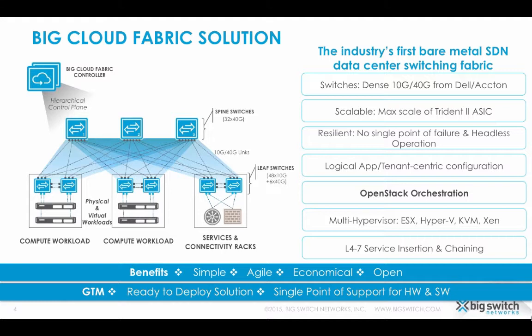Some intelligence is judiciously offloaded to Switch Light OS on each switch for resiliency and scale. Redundancy is built throughout the fabric, across switches and controllers, to ensure no single point of failure. Headless mode, where the entire controller cluster is unavailable, is also supported. With built-in multi-tenancy, BCF achieves application agility with configuration based on tenant-centric logical networks. BCF supports seamless insertion of layer 4 to layer 7 services such as load balancers and firewalls, and also supports service chaining. BCF integrates very well with OpenStack, making OpenStack cloud a very popular deployment scenario.